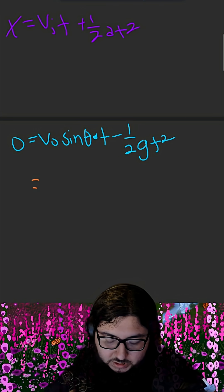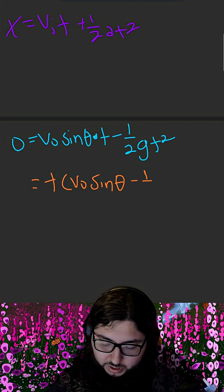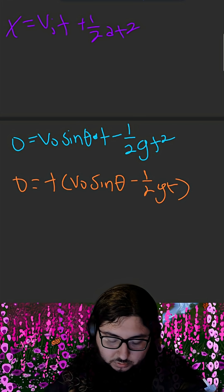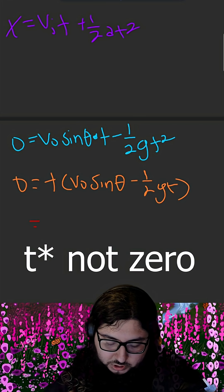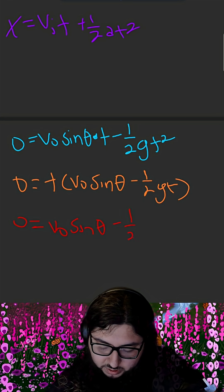Next, we're going to solve for t. Factoring out t, we get v naught times sine of theta minus 1 half g t, and that's still equal to 0. If we divide by 0 on both sides, our new equation becomes 0 is equal to v naught sine of theta minus 1 half g t.